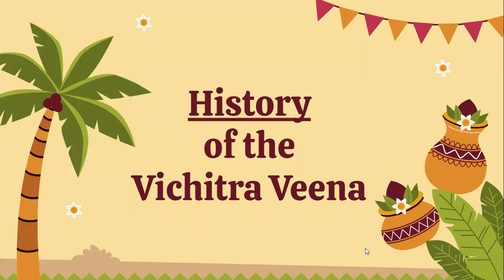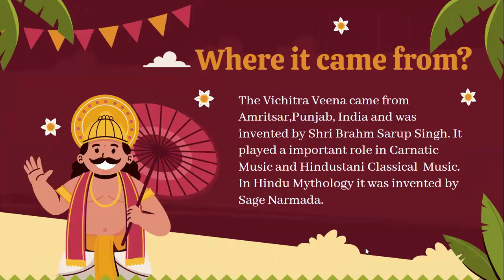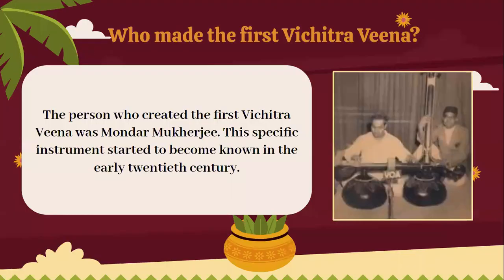History of the Vichitra Veena: The Vichitra Veena came from Amritsar, Punjab, India, and was invented by Shri Brahm Sarup Singh. It played an important role in Carnatic and Hindustani classical music. In Hindu mythology, it was invented by Sage Narmada. The person who created the first Vichitra Veena was Mondar Mukerji, and this specific instrument started to become known in the early 20th century.